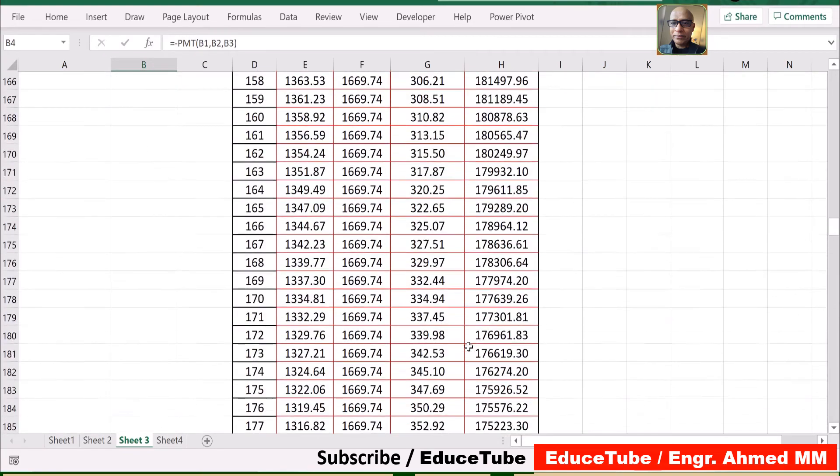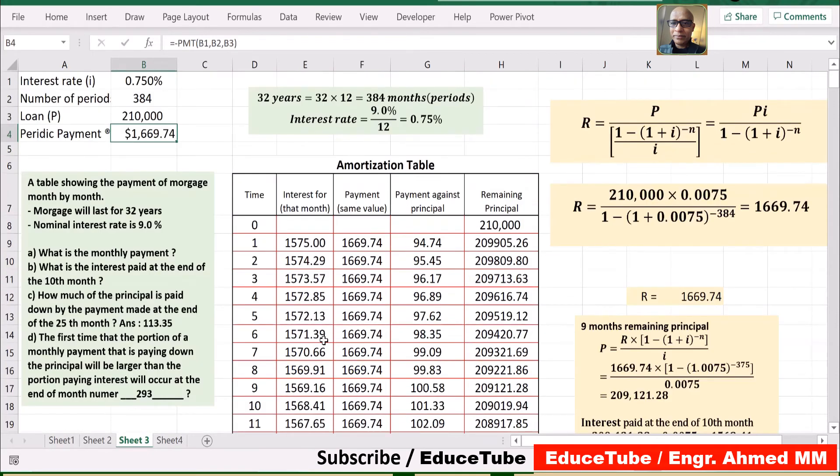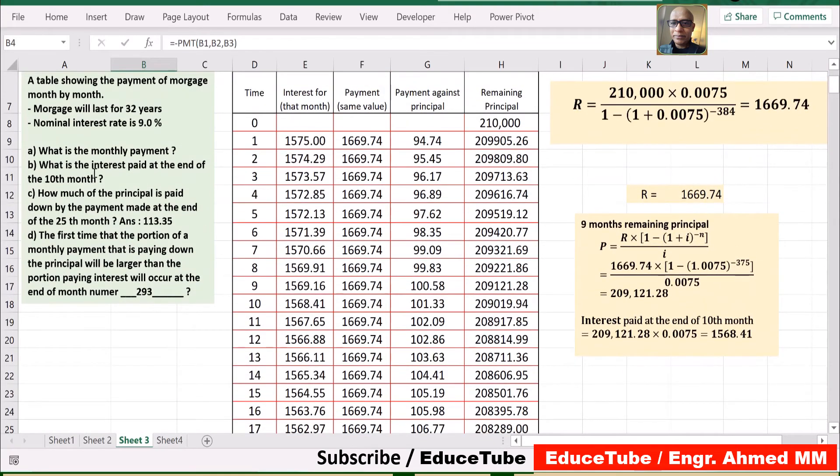Now we have some questions to solve. Let's see the first one: What is the interest paid at the end of the tenth month? If we make an amortization table for these 384 payments, it is very easy for us to see what the interest paid at the end of the tenth month is. But if we don't have this table in an exam or some other places, and we are asked what is the interest paid at the end of ten months, how can you find it using formula?